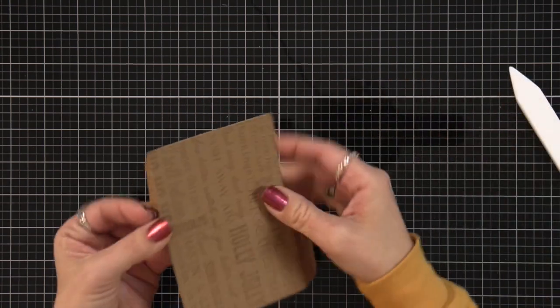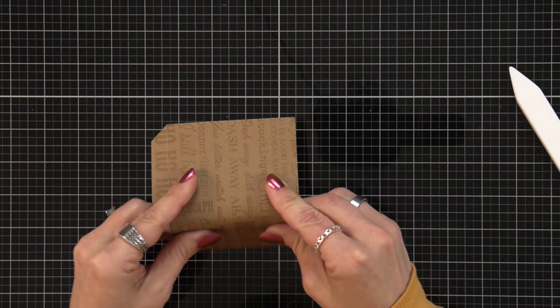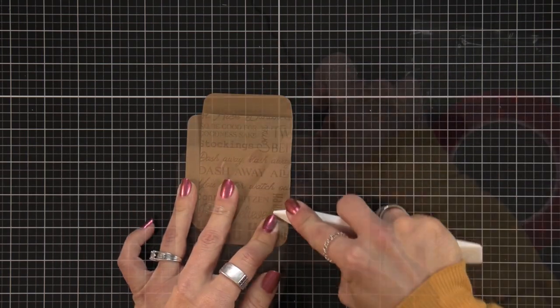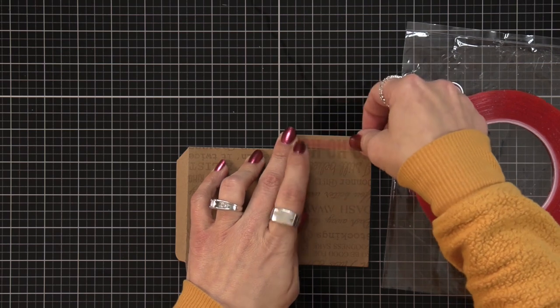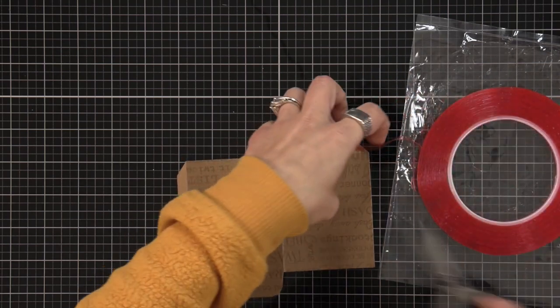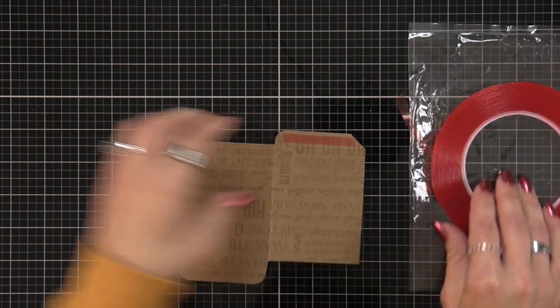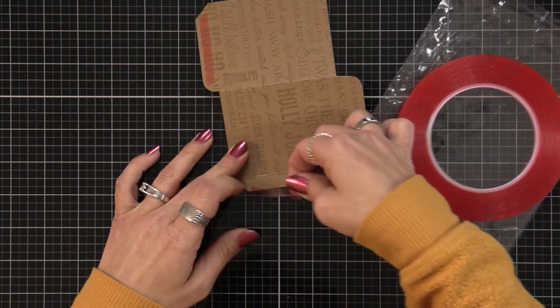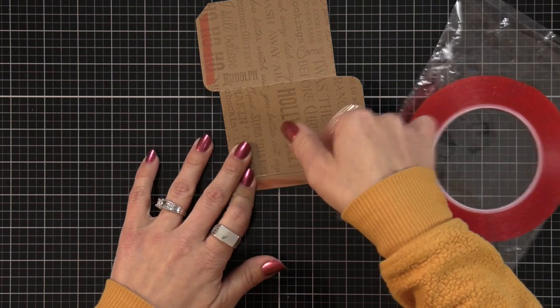So after I have all of those folds scored and reinforced with the bone folder I am going to add some red line tape to the sides that are going to fold in. So here at the bottom and you can tell which one is going to fold in because it has that angled cut. So I added red line tape there and then I'm adding the red line tape to the side.